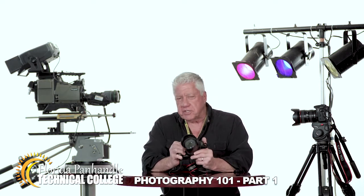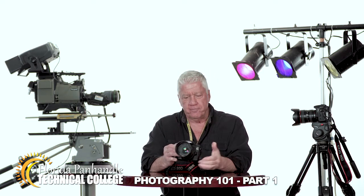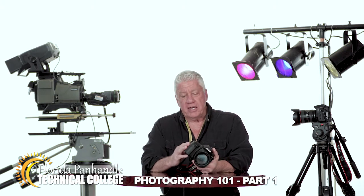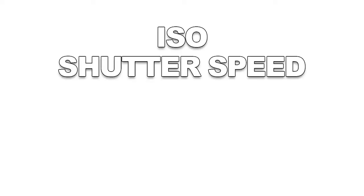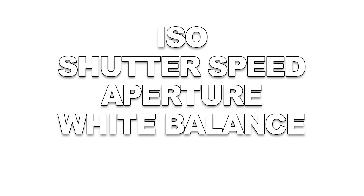In manual mode, it takes a little bit more work and a little bit more education, but it's so much more rewarding. The biggest single difference is that you can duplicate your results over and over. In manual mode, you're going to decide what your settings are going to be for four main things: ISO, shutter speed, aperture, and white balance.